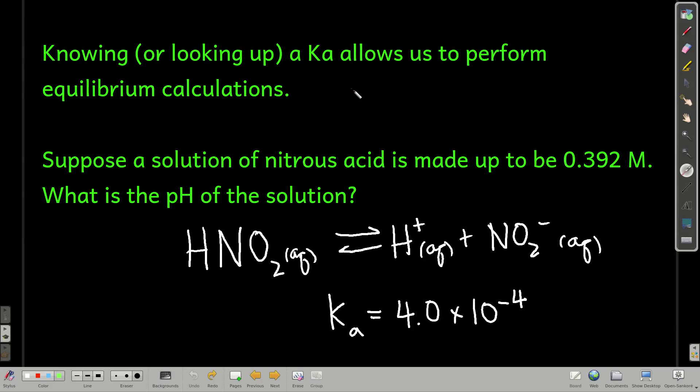So once we know the Ka or pKa, we can do some calculations. For example, let's say we have a solution of nitrous acid and it's 0.392 molar in nitrous acid. What's the pH of this solution? And the important things to know are this is the equilibrium reaction. And this is the Ka, which I just got from the previous table. By the way, you do not need to memorize any Ka's or anything like that. We will always just look them up. So knowing this, pause for a moment and see if you can solve this problem.